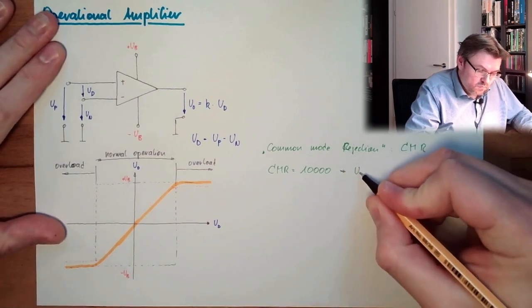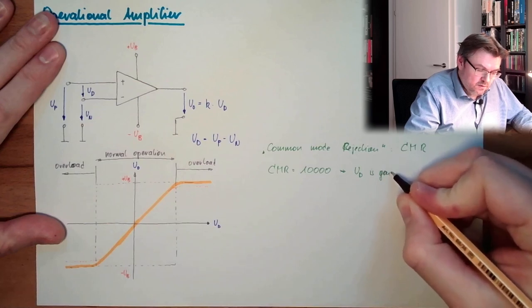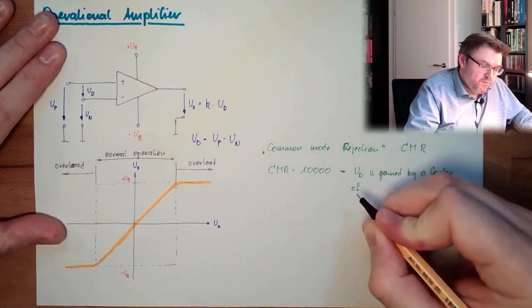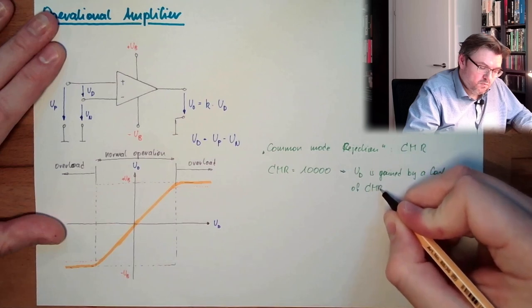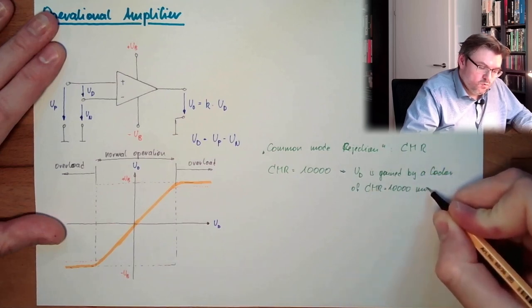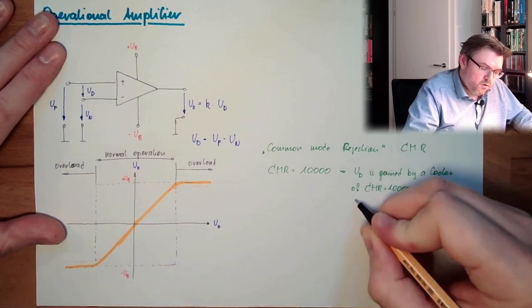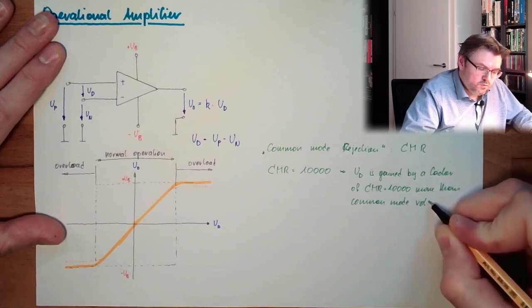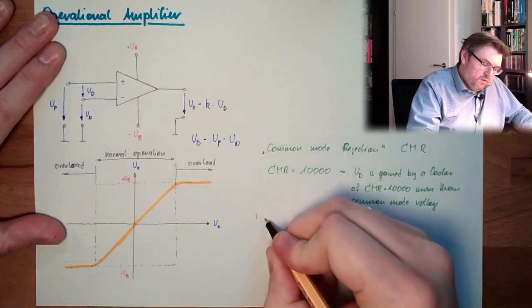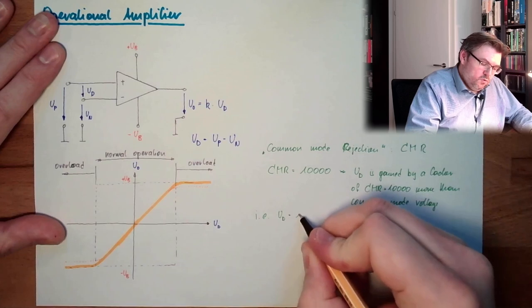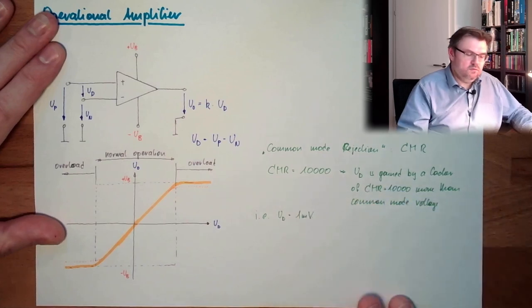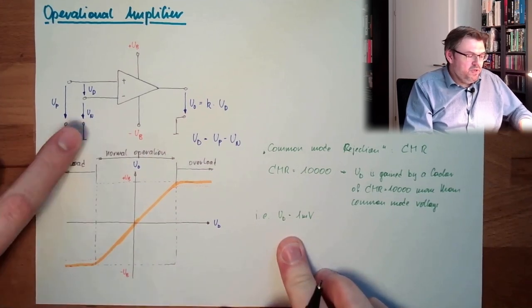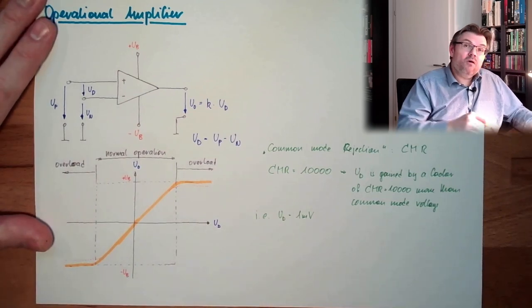This means the differential voltage is gained by a factor 1,000 more than a common mode voltage. So UD is gained by a factor of CMR, common mode rejection, equals 10,000 more than a common mode. In example, UD equals 1 millivolt would produce some output. How big must be UP and UN, the common mode voltage, that the same output will appear?